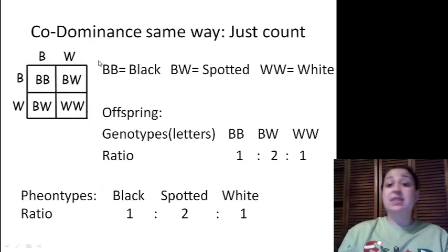When we move into codominance, it's again the exact same way. It's just counting. When we take our offspring, we have big B big B, we have big B big W, and we have WW. Those are going to be our genotypes, the letters. Again, the ratio is just counting. I put them right underneath. That's going to be a one big B big B. We have two big B big Ws. Then we have one WW.